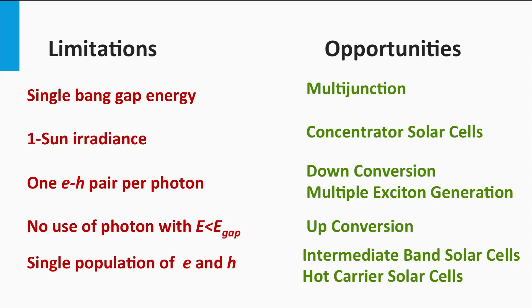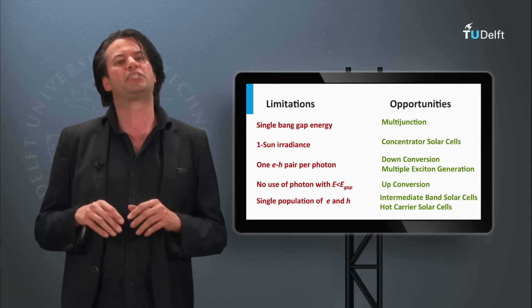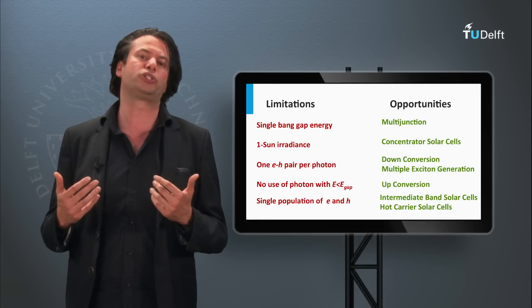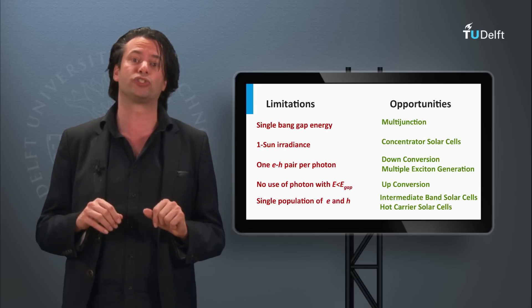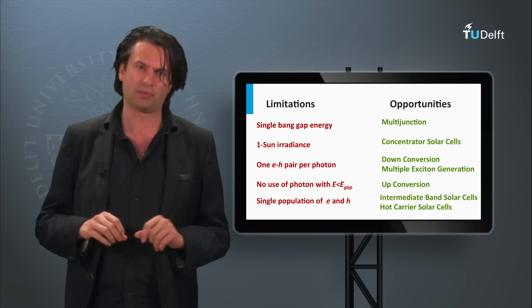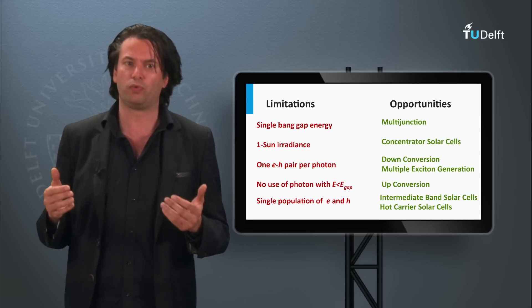Another theoretical solution is the concept of intermediate band solar cells — a concept in which an electronic band within the band gap is intentionally engineered, to enable photons below the band gap to help additional electrons to be excited as well. Note that besides multi-junction and the concentrator approach, none of these concepts have resulted in high efficiency solar cells or even been demonstrated yet. These other concepts are still in a fundamental research phase.